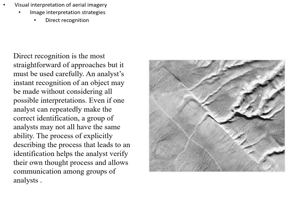Direct recognition is the most straightforward approach, but you have to be careful — you might make an instant recognition of an object without considering all possible interpretations. Even if one analyst can repeatedly make a correct identification, a group of analysts might not always have the same ability or might have different interpretations that need to be reconciled. Explicitly describing how you make an identification helps analysts verify their own thought process and allows communication among a group, which is particularly important when multiple analysts are working at different times and will rely on documentation.